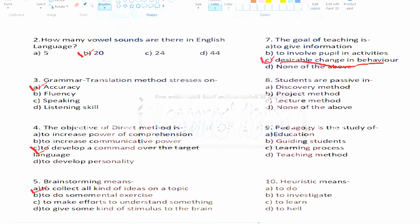Question number eight: students are passive in which method? Options are — Option A: discovery method, Option B: project method, Option C: lecture method, Option D: none of the above. In discovery and project methods, students are active. In the lecture method, only the teacher delivers and students just listen, so students are passive in the lecture method.